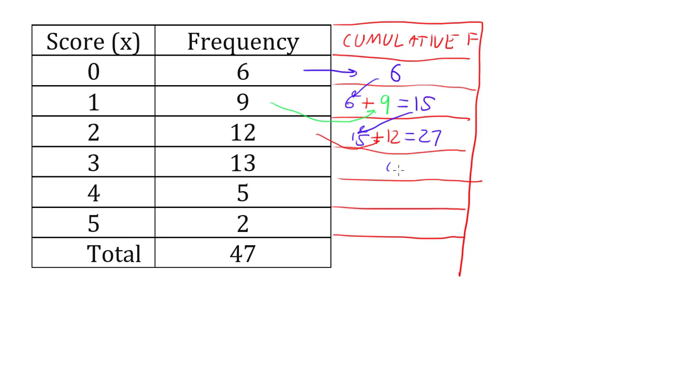And fifteen plus twelve is twenty-seven. And I just keep adding on down. Twenty-seven plus thirteen is forty. Forty plus five is forty-five. And forty-five plus two is forty-seven. And one way we can check to make sure we got this correct is that because we're adding up frequencies, the totals should both be the same. We have forty-seven here, forty-seven there so we haven't made a mistake.